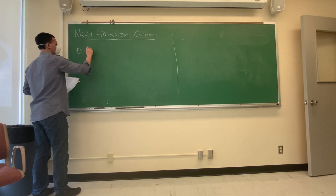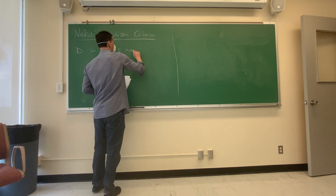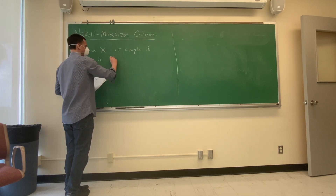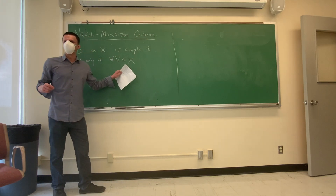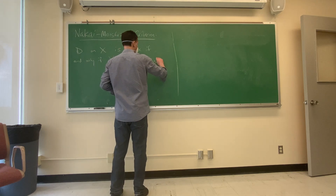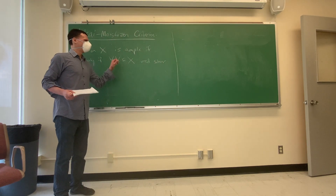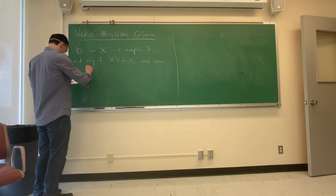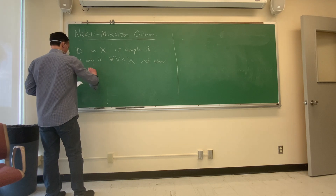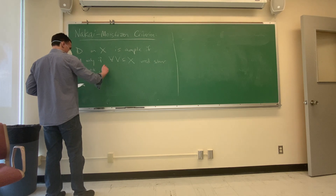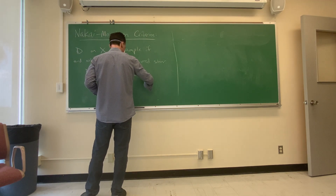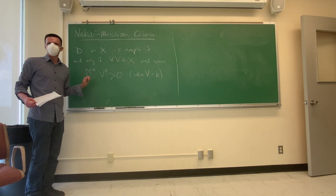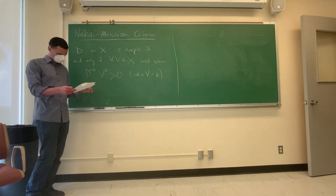Nakai-Moishezon criterion: a divisor D on X is ample if and only if for all irreducible subvarieties V of X — including X itself, which is important — we have that D restricted to V, intersected to the top dimension, is positive. That is, D^k · V > 0, where k is the dimension of V. In particular, we need the n-th power of D, the self-intersection number, to be positive.